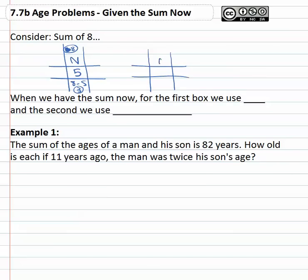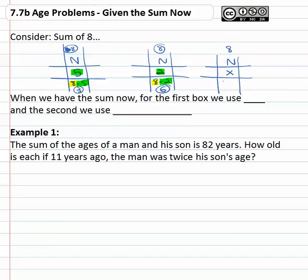What if the first person was two right now and the sum is eight? Eight minus two tells you the next person is six. Notice what we have is the total of eight and then we subtract whatever was the first cell. So if I'm interested in their age now with a total of eight and I don't know what they are now, the other person is going to be that same subtraction: the total minus x. When we're told the sum now, for the first box we use x, and the second box is the total minus x.